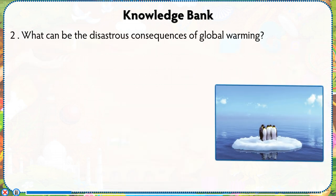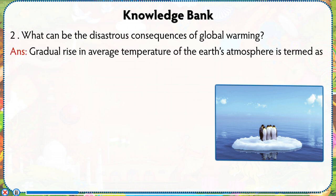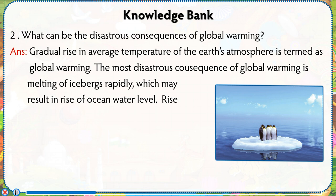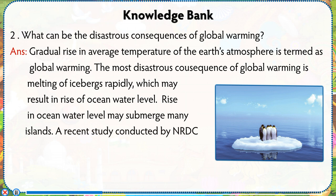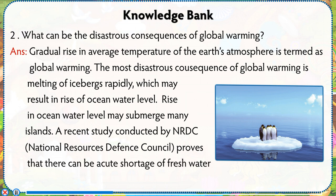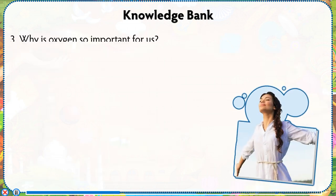Number 2: What can be the disastrous consequences of global warming? Answer: Gradual rise in average temperature of the earth's atmosphere is termed as global warming. The most disastrous consequence of global warming is the rapid melting of icebergs, which may result in a rise of ocean water level. Rise in ocean water level may submerge many islands. A recent study by NRDC (National Resources Defense Council) proves there can be acute shortage of fresh water in the future due to global warming.